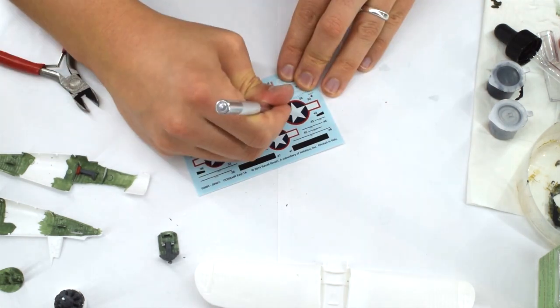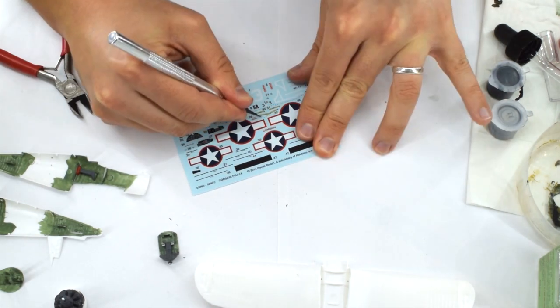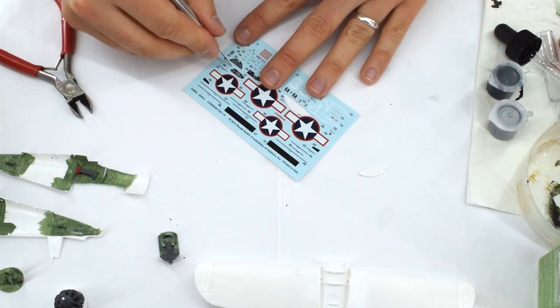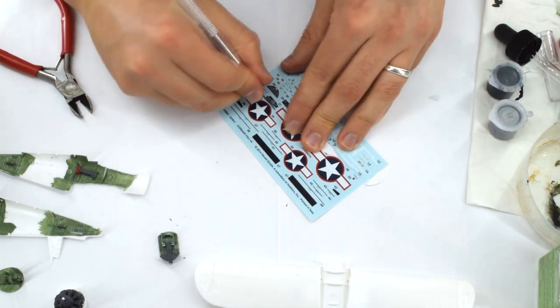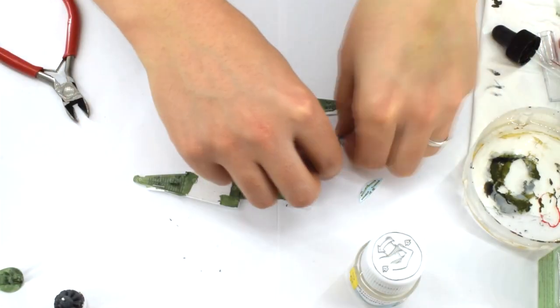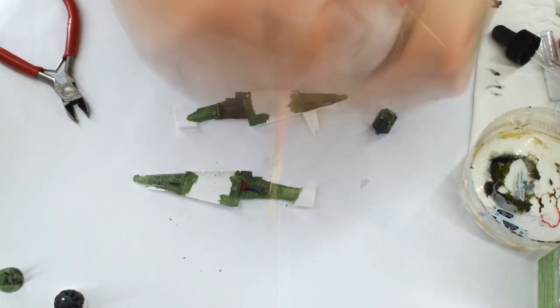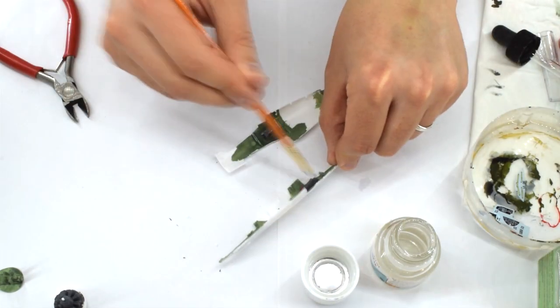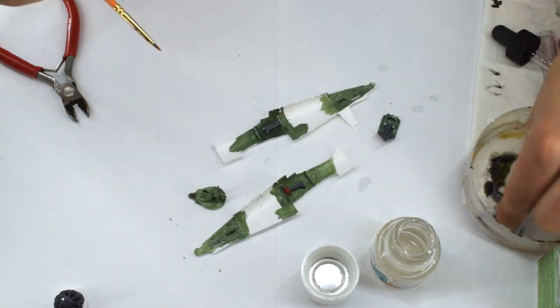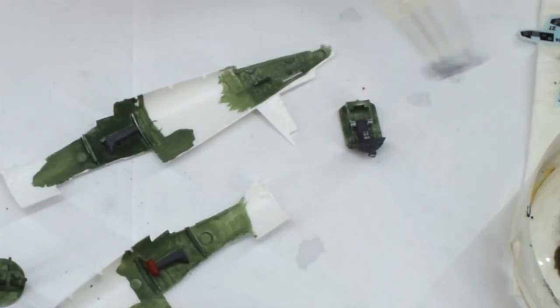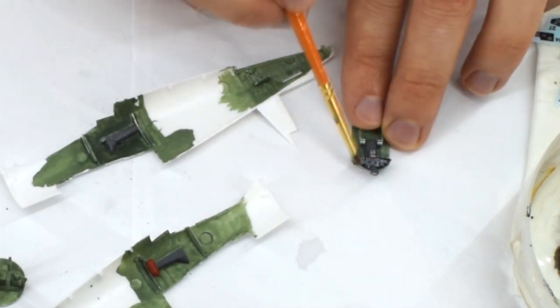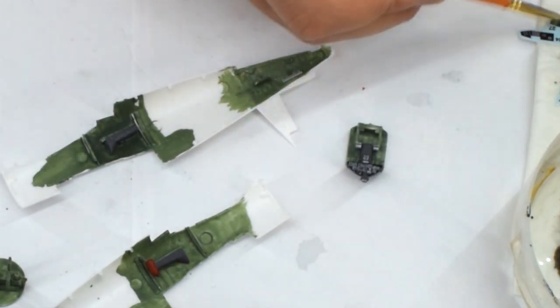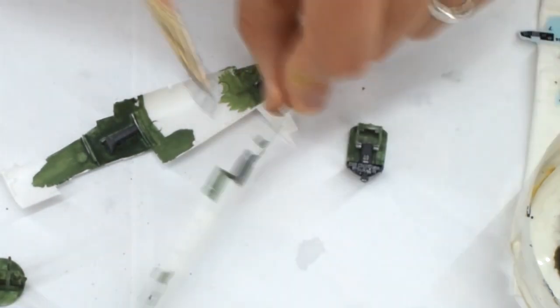The seatbelt and cockpit control panel decals were then cut from their sheet using a sharp knife. Care has to be taken here to avoid damaging them or the other decals on the sheet. They were then soaked in warm water until they began to release from the backing paper. Humbrol decal fix was applied to the areas inside the cockpit that were to receive the decals.